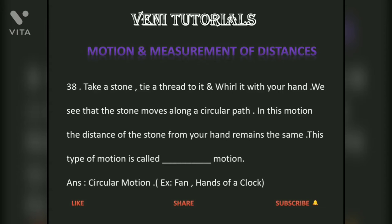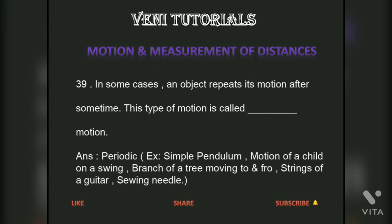Take a stone, tie a thread to it and whirl it with your hand. The stone moves along a circular path, and the distance of the stone from your hand remains the same. This type of motion is called periodic motion.